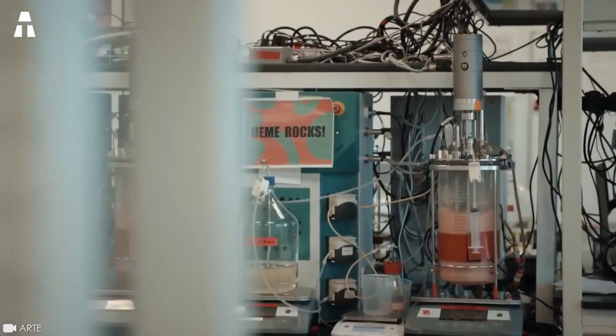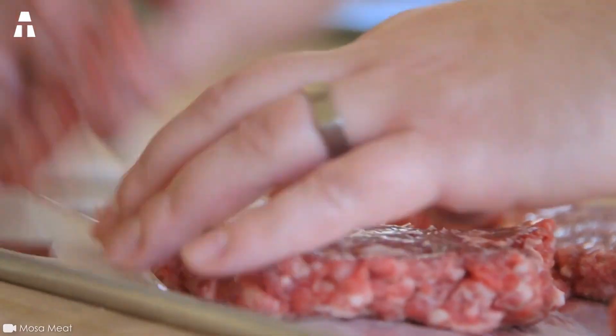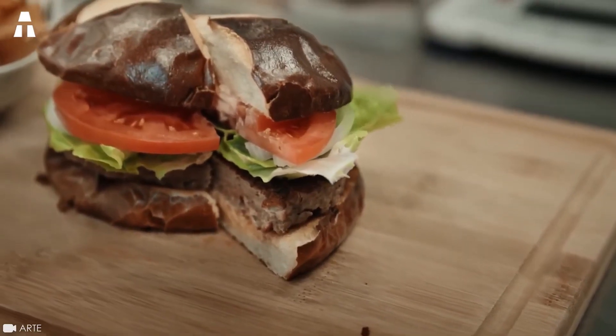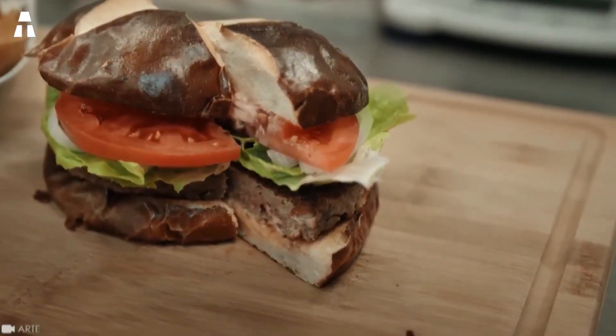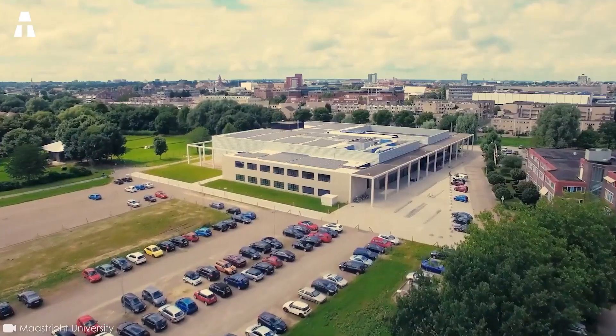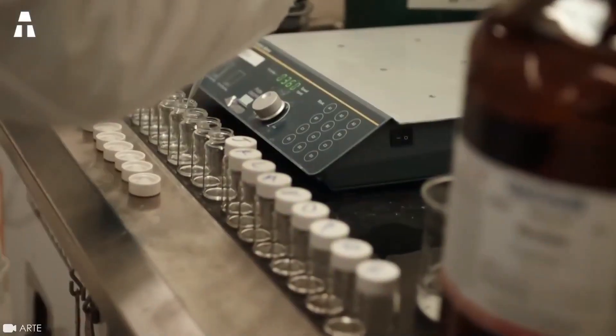This new form of meat first appeared in 2013. The first hamburger based on cultured food was tasted in London. It was created from scratch by Mark Post, a professor at Maastricht University in the Netherlands. The experiment cost some €290,000 in research.